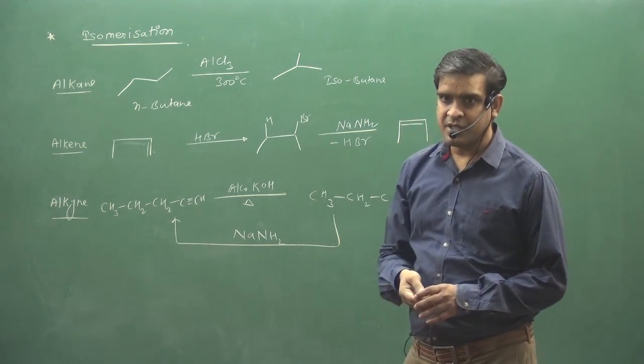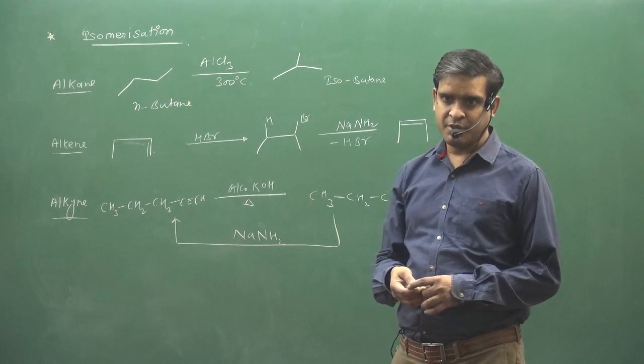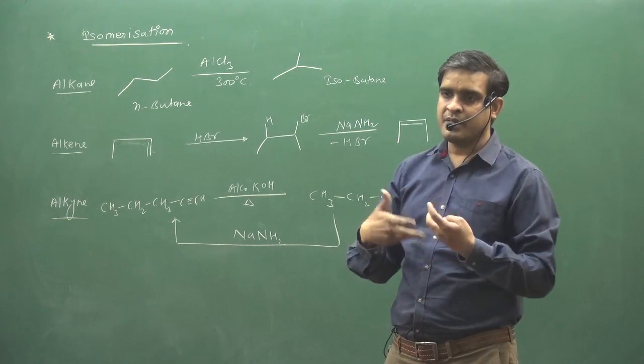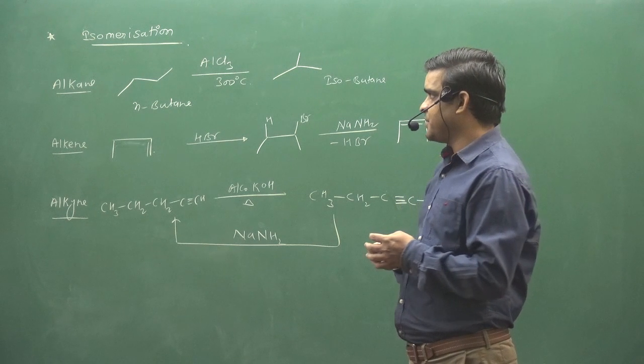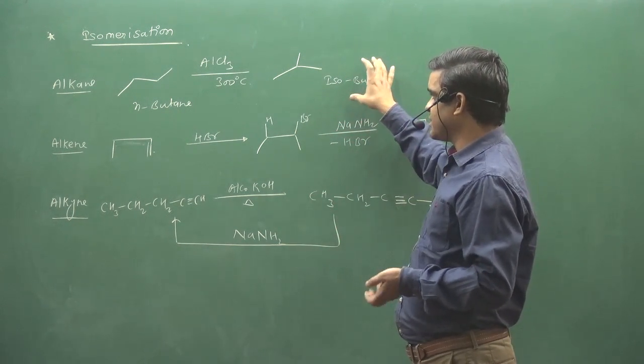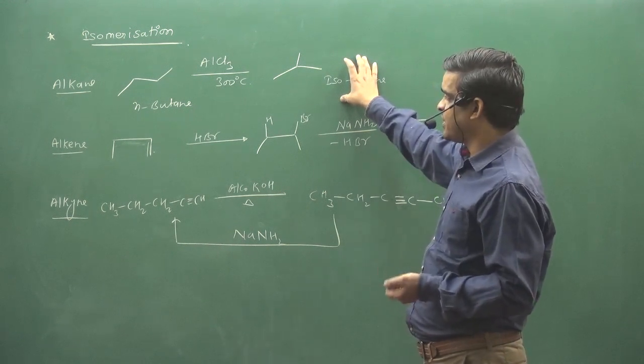If you have pentane, the number of products will be much more because generally alkanes with AlCl3 will convert into more branched alkanes. Heating alkanes with AlCl3 converts them into more branched alkanes.